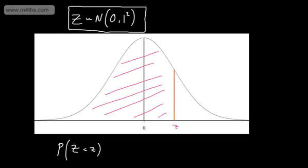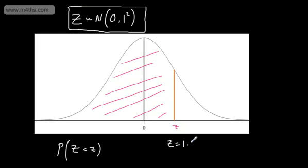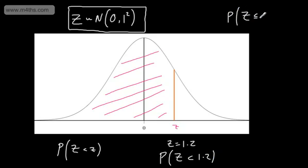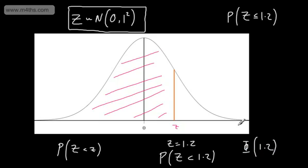Let's give z a value. Let's say that lowercase z is equal to 1.2. So what we want to find is the probability that our random variable Z is less than 1.2. If in a textbook or exam question you see the probability of Z being less than or equal to 1.2, these things are interchangeable — the probability that it's exactly 1.2 is 0, so these mean the same thing. When we look this value up in our table, we find phi of 1.2. Phi of z gives us the area trapped under the curve to the left of z, and that gives us our probability.